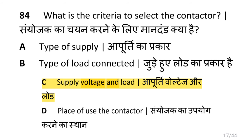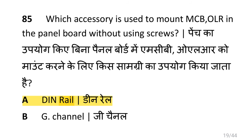What is the criteria to select the contactor? i.e. supply voltage and load. Which accessory is used to mount MCB, i.e. miniature circuit breaker, and OLR, i.e. overload relay, in the panel board without using screws? i.e. DIN rail.